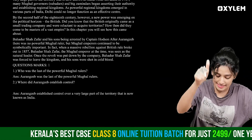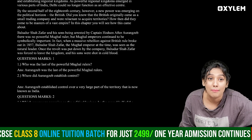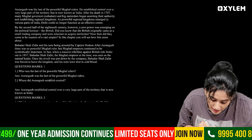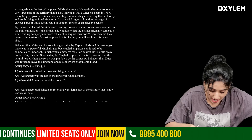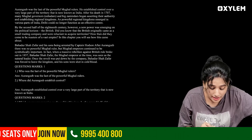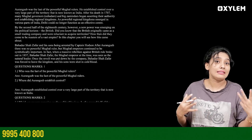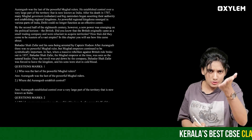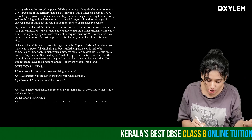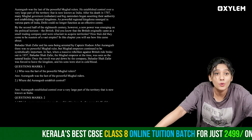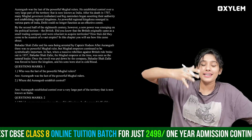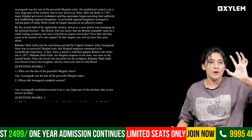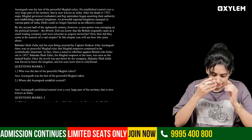Our second question: Where did Aurangzeb establish control? He established control over a very large part of the territory that is now known as India.